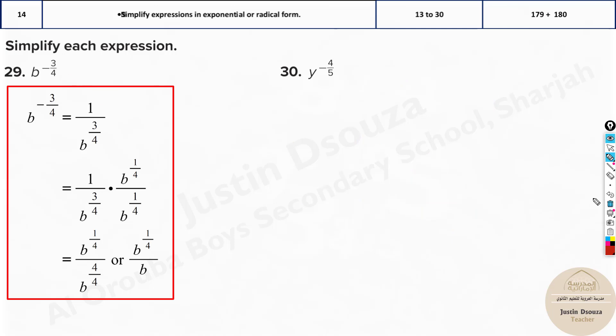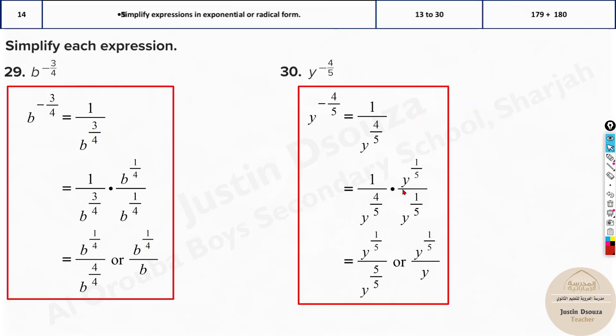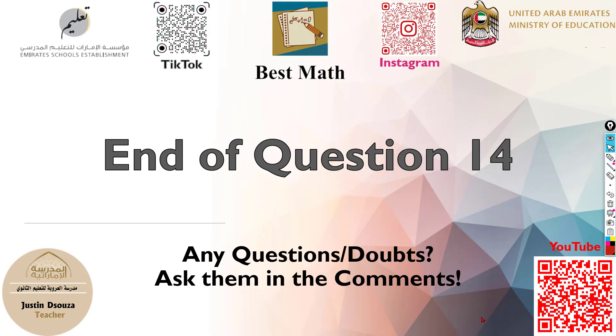Now, if you're thinking what happened over here, the same thing. You write it as 1 divided by b 3 fourth positive. How to make this whole? Just multiply b by 1 fourth and 1 fourth. Now, in the numerator, it's b 1 fourth. But, denominator, what happens? b to the power 1 or b. So, that is the answers. And, that is the end of this question.